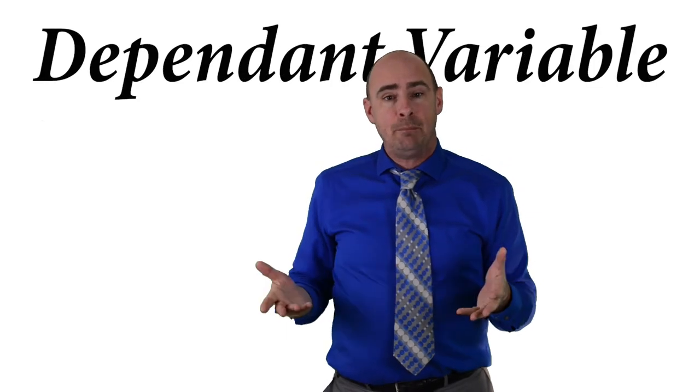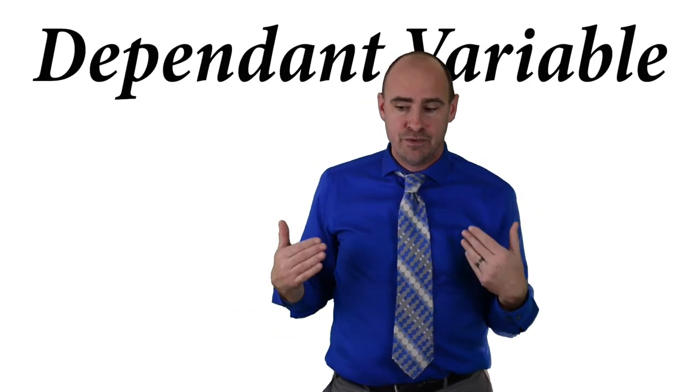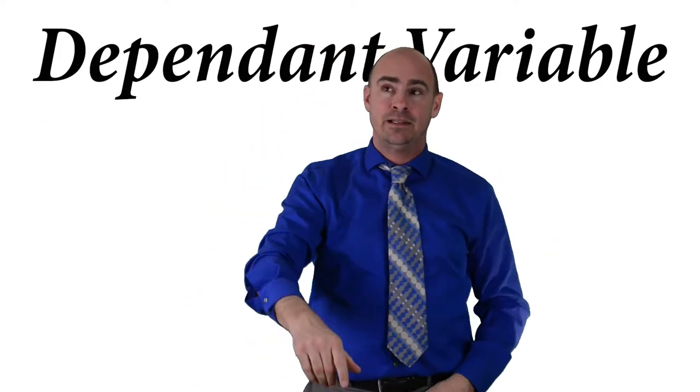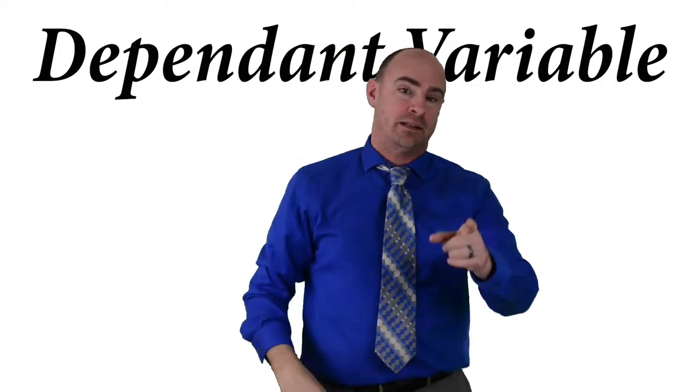The thing is the independent variable. The dependent variable is what happens? It's what you measure. In our field, it's your behavior. So other things that we're going to talk about. So that's independent, dependent. Dependent is dependent upon the independent. That's another way to think about it.